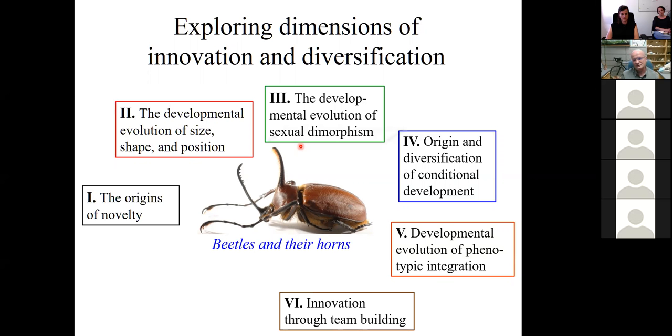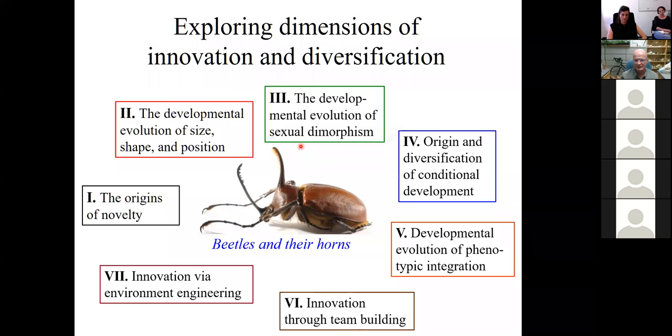We also switch gears and explore innovation through team building, when organisms from different taxa form collectives, symbiosis, and as a team manage to adapt and innovate in ways that component taxa cannot. And lastly, we explore innovation for environment engineering, when organisms innovate by changing the environment that surrounds them. So today, I hope to give you exemplars of some of the research that caters to most of these dimensions.